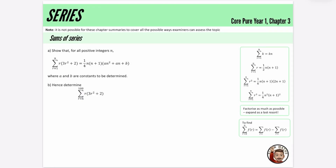We are doing the Further Math Chapter Summaries and we are on Core Year 1, Chapter 3. I have this note at the top of all of these: it is not possible for these chapter summaries to cover all of the possible ways that you can be assessed on this topic. So please make sure you're using this just for revision. It is not going to be enough just to look at this — you have to look at exam questions as well.